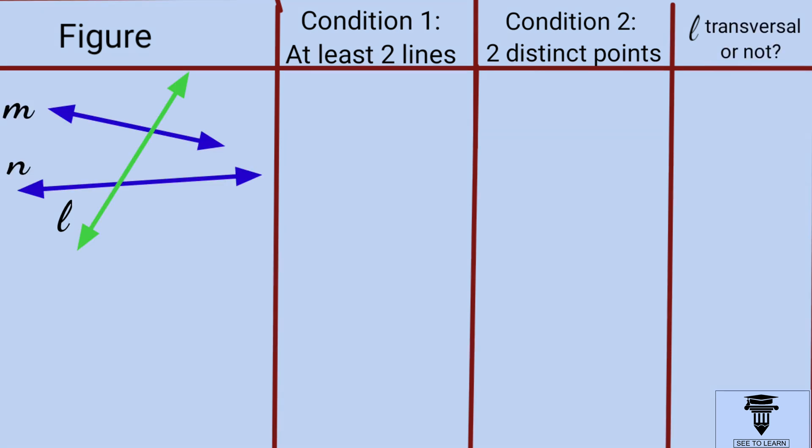Now, in this figure, you can see the first condition is satisfied. Let's see the points of intersection. They are distinct, so the second condition is also fulfilled. Therefore, L is a transversal.